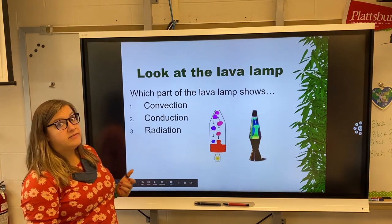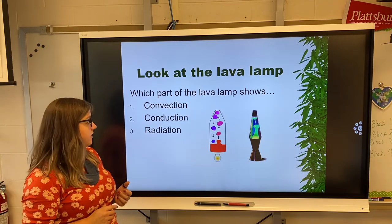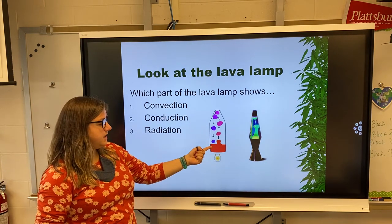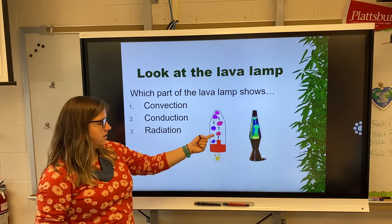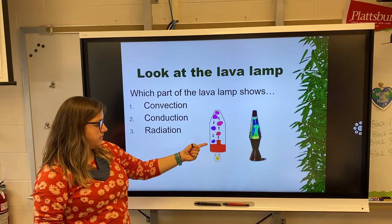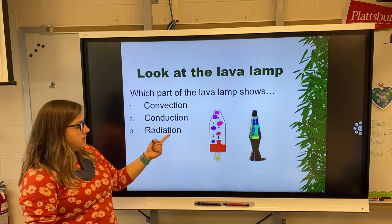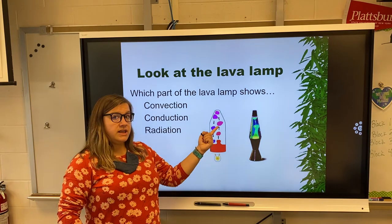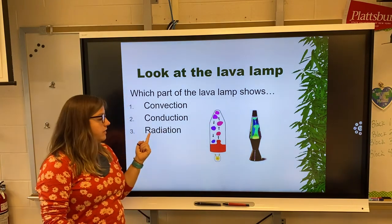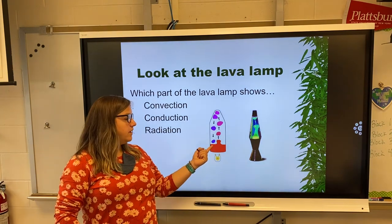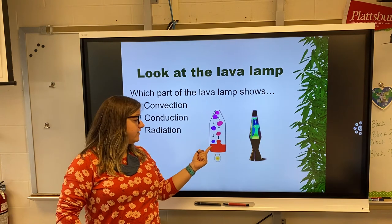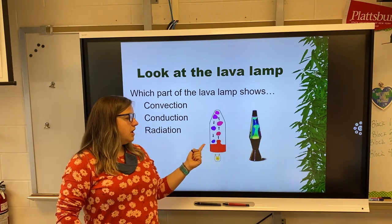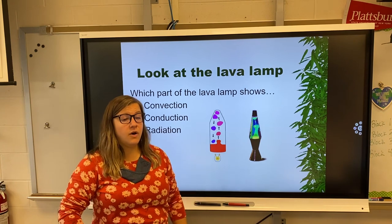Look at this lava lamp — lava lamps have all three things happening. Which part shows convection? You have differences in densities: the liquid is heated up, it rises until it cools down, then drops back into the blob. Conduction: all the molecules in here are being heated up, they're all touching each other, until it gets too warm and starts to rise through convection. Radiation: there's a light bulb at the bottom heating up the blobby stuff, traveling through the air and warming it up.